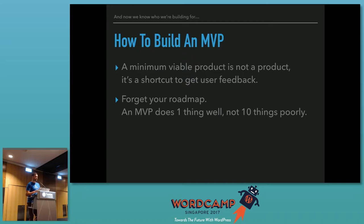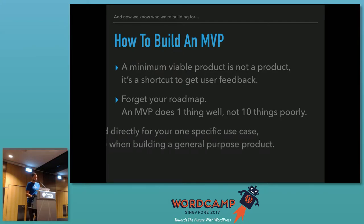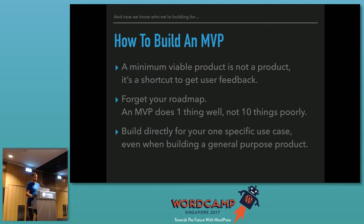Forget your roadmap, pick one thing and do it well. An MVP does one thing well — it doesn't do 10 things poorly. And it also doesn't do 10 things well. If you build 10 really good features and address 10 really awesome use cases and release it, chances are people are only going to care about one of them and you're going to build nine things people don't actually want. So pick one, build directly for that one specific use case. And by the way, even if you're building a general purpose product, pick one specific thing to focus on in the beginning and build your product to do that one thing really well.